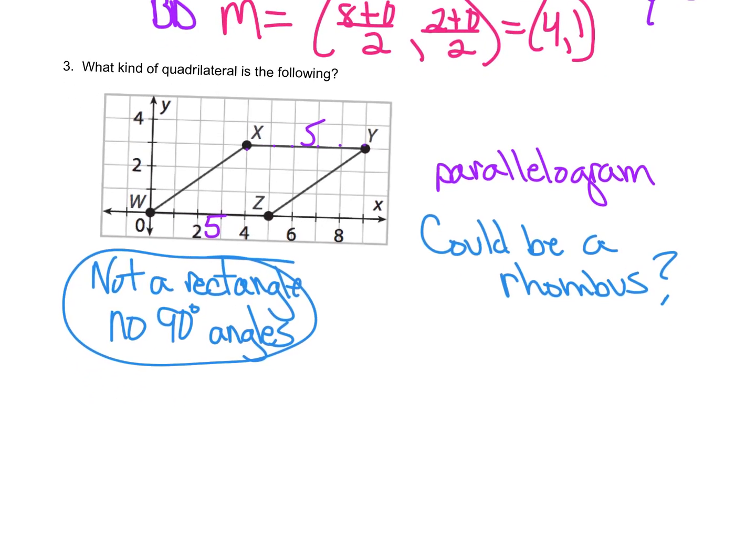But it could be a rhombus. If it's a rhombus, all sides are congruent. So let's see. 1, 2, 3. 1, 2, 3, 4. And do you remember what I told you about the 3, 4? You got it, 5 triangle. 1, 2, 3, 4. 1, 2, 3. And that side's 5. So yes, because it's a rhombus.